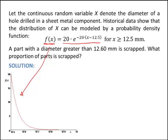Before I started this video, I drew this graph. So this is a graph of the probability density function, and x is the hole diameter. So you can see here the hole diameter was defined as x is bigger than 12.5 millimeters. And so we start this function at 12.5 millimeters and get larger.